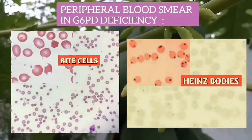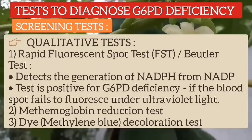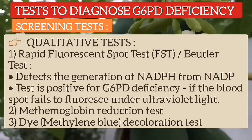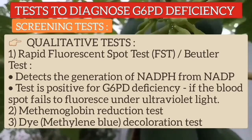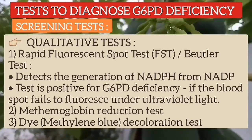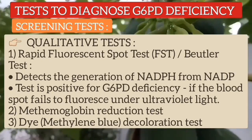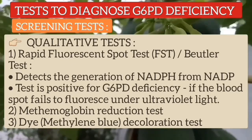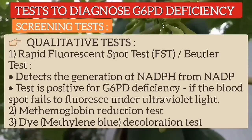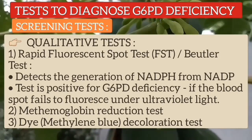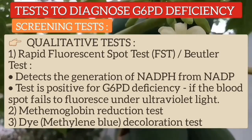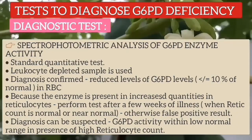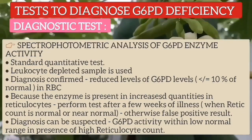Bite cells and Heinz bodies are seen in peripheral smear. The specific tests to diagnose G6PD deficiency in RBCs include screening tests, which are qualitative tests. The first is the rapid fluorescence spot test, also known as the Beutler test, which detects the generation of NADPH from NADP; the test is positive for G6PD deficiency if the blood spot fails to fluoresce under ultraviolet light. The second is the methemoglobin reduction test, and the third is the dimethylene blue decolorization test. The definitive test is the quantitative spectrophotometric analysis of G6PD activity.